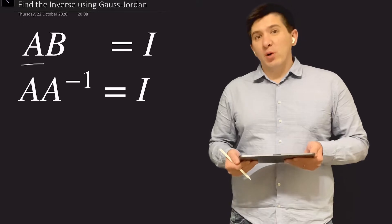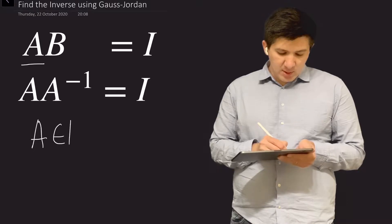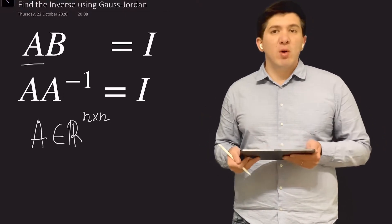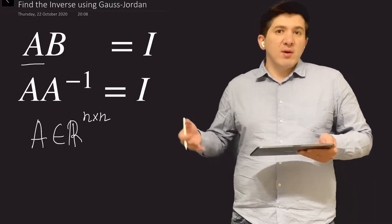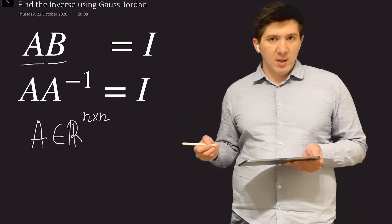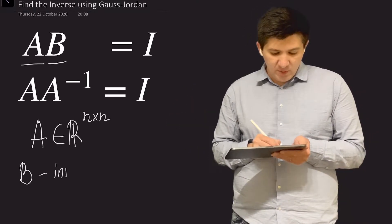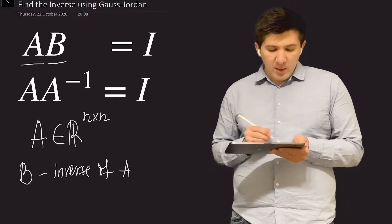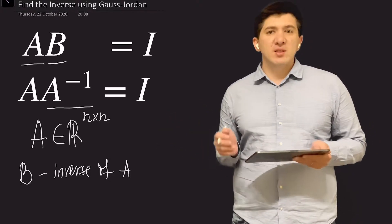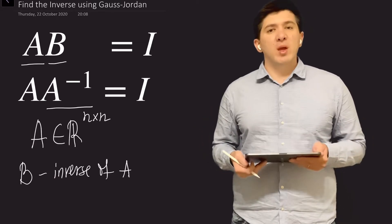Let's first define what the inverse of a matrix is. If you are given a square matrix A — meaning the number of rows equals the number of columns, such as a 2×2, 3×3, or 4×4 matrix — and if there exists an inverse matrix B such that A multiplied by B equals the identity, then we call B the inverse of A, denoted A to the power of minus 1. This is not the reciprocal; it is the inverse, defined by the property that the multiplication of these two matrices equals the identity matrix.